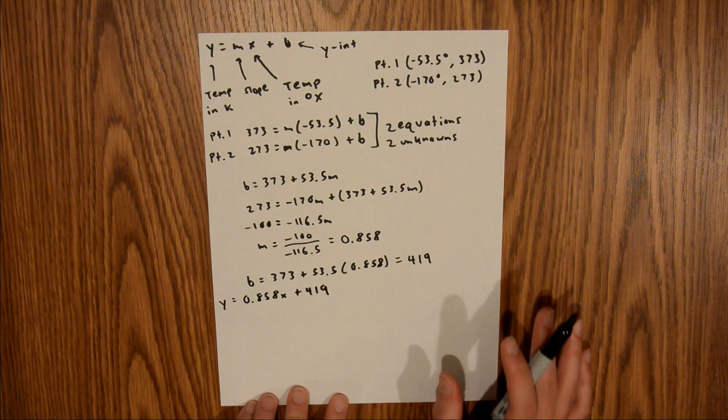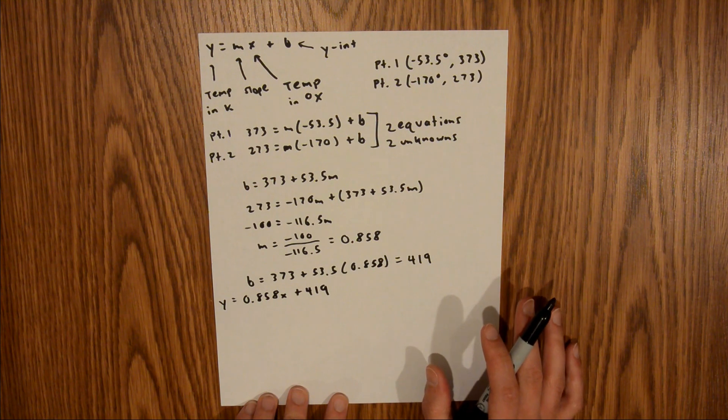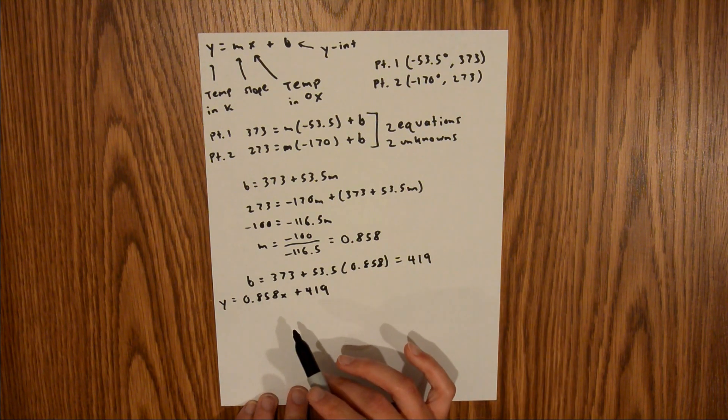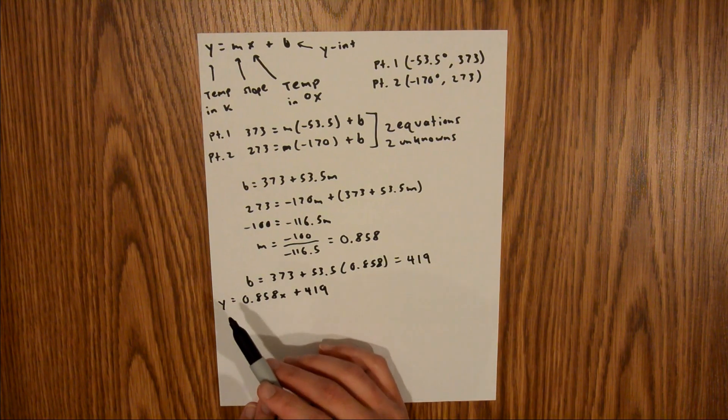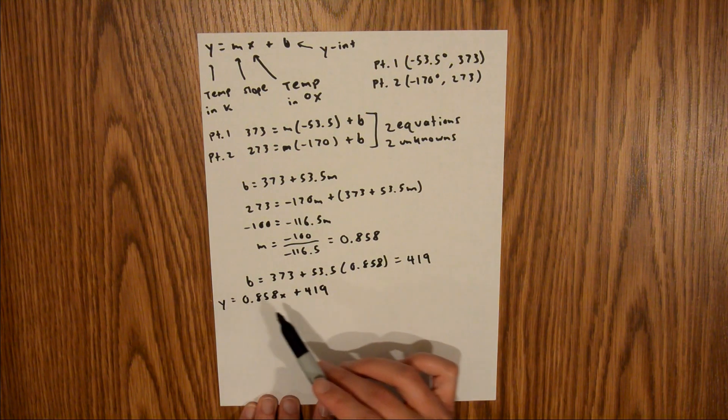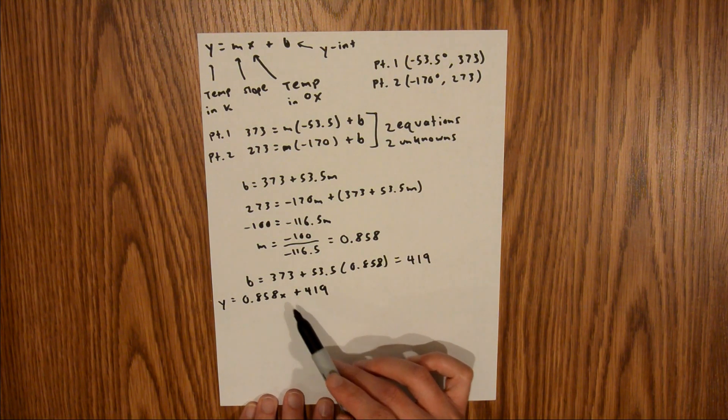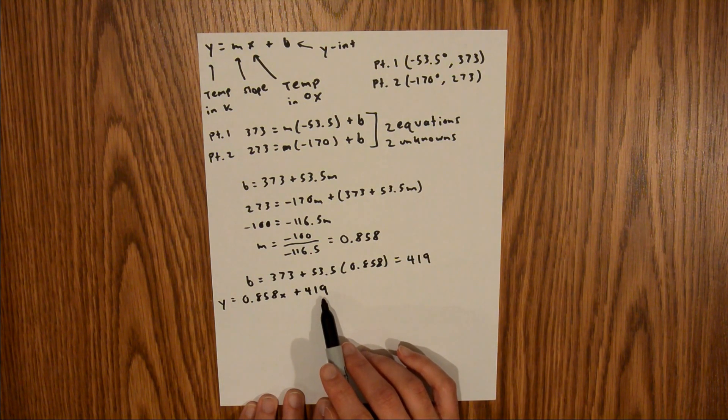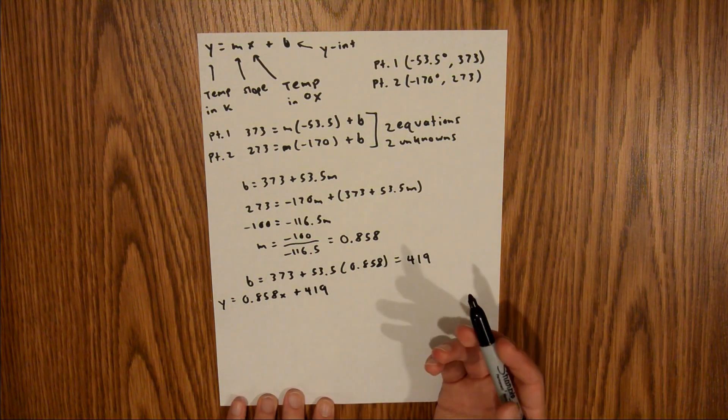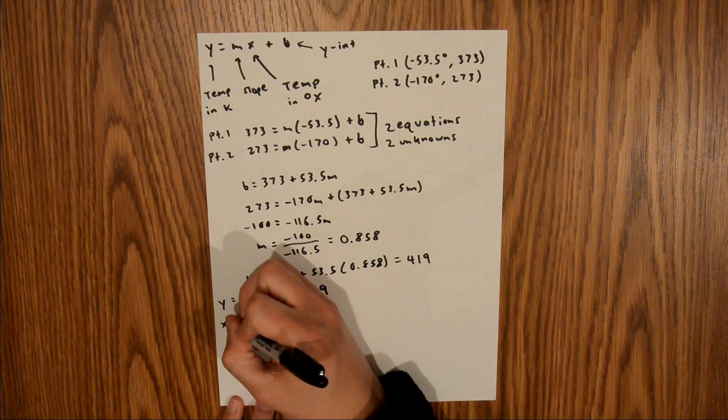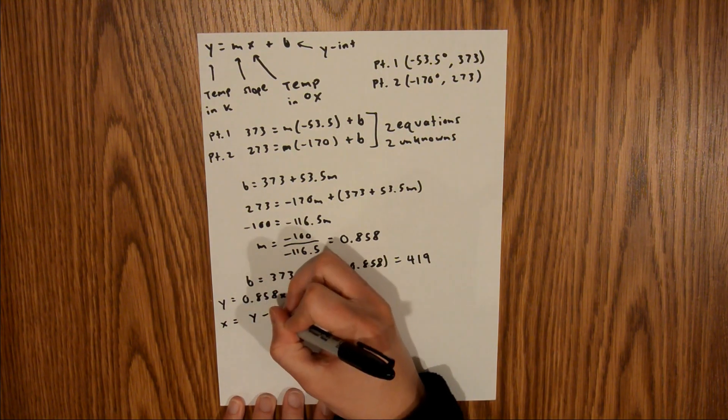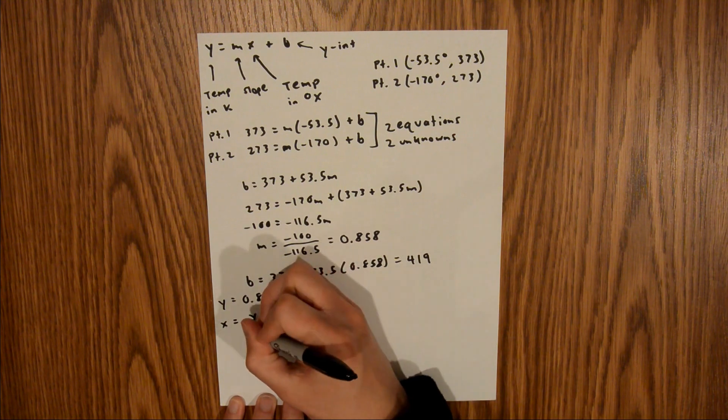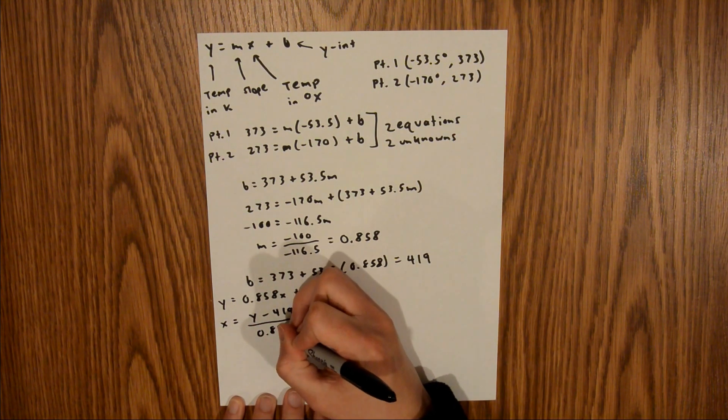Now, the problem asked me to convert 340k into degrees x. So, using this equation now, we can plug in our value of 340k over here, and then solve for our value of x. So, I'm just going to rearrange this equation for x first by subtracting 419 from both sides, and then dividing both sides by 0.858. So, that's going to give me that x is equal to y minus 419 over 0.858.